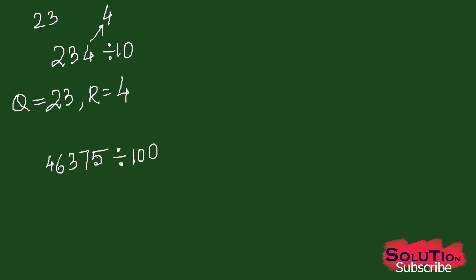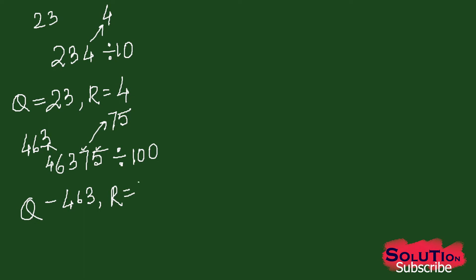If I am dividing by 100, then I write the digit in the ones place and tens place together. So 75, I am writing here, and the rest of the digits together — 463. So from here we can say quotient equals 463 and remainder equals 75.